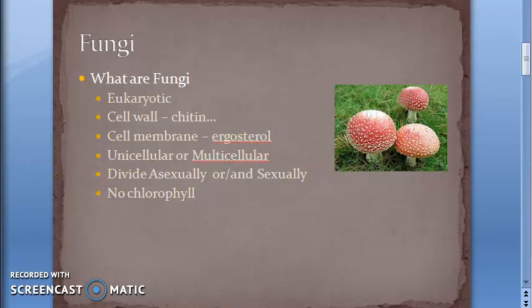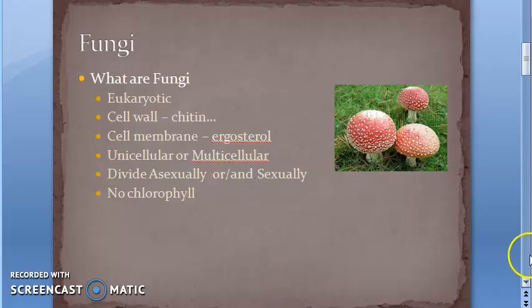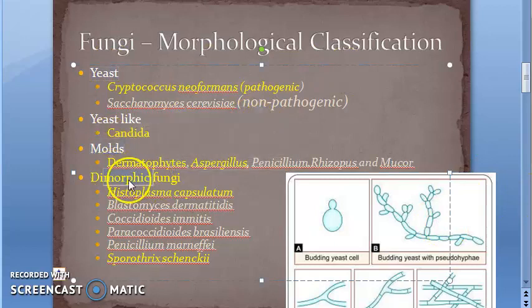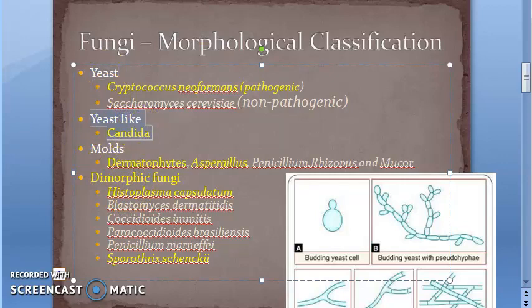Now let's go to the classification of fungi. There is a morphological classification and a taxonomical classification. We'll go with morphological classification for now. The main categories to remember are: yeast, mold, dimorphic, and yeast-like (where Candida falls).